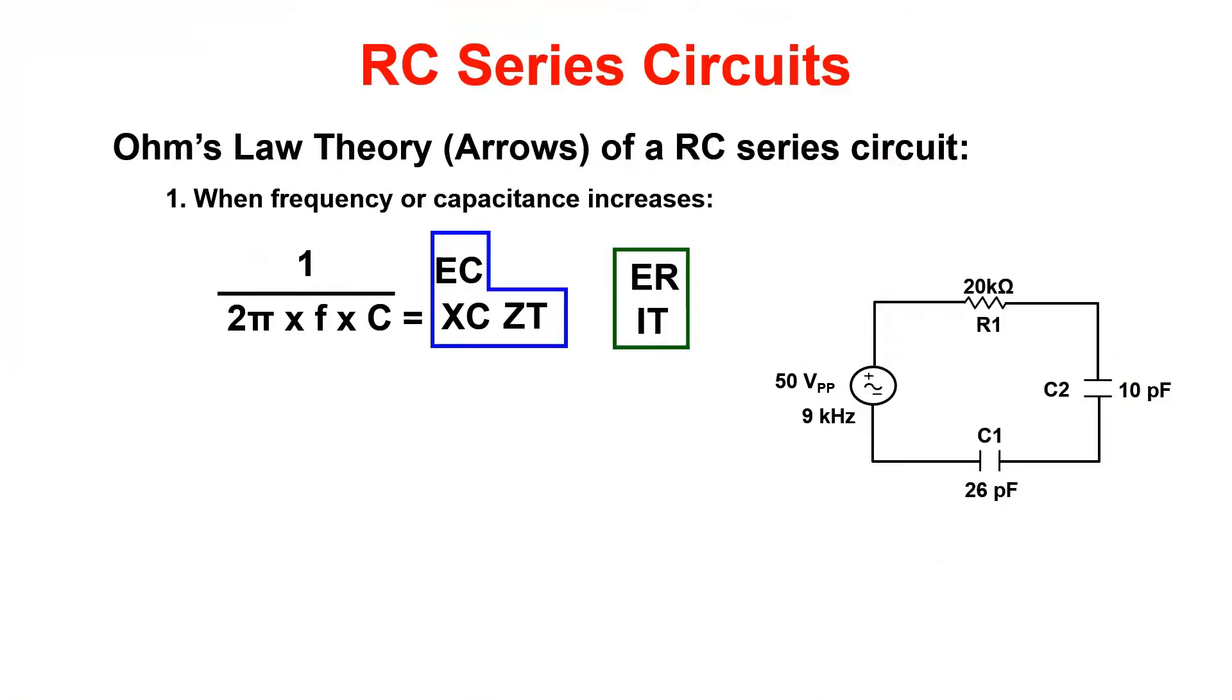Using Ohm's law we can determine what happens to an RC series circuit. Just like inductors, we can use couch coffee table but with one big difference.